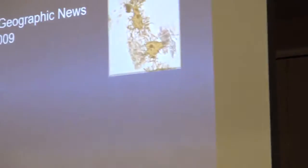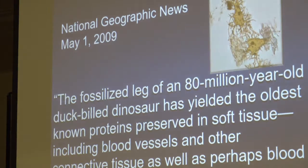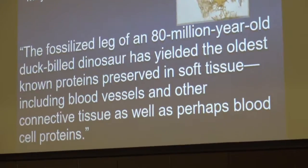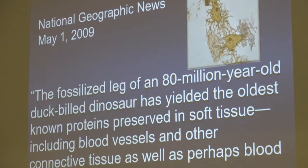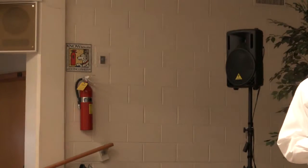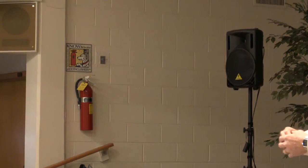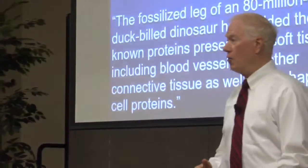National Geographic — in their May 2009 journal, they stated: 'The fossilized leg of an 80-million-year-old duck-billed dinosaur has yielded the oldest known proteins preserved in soft tissue and perhaps blood cells.' You know what happens to proteins when something dies? They're made up of amino acids, and when something dies, the amino acids start coming apart immediately. How can that last for 65 or 80 million years? No known process will do that. What we're seeing here is exactly what the Bible teaches — that God created in six days, only thousands of years ago.